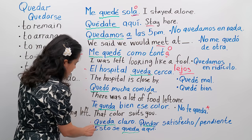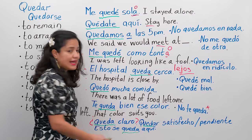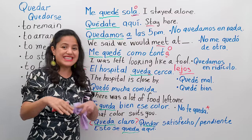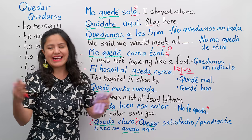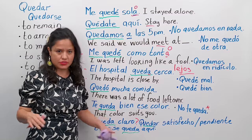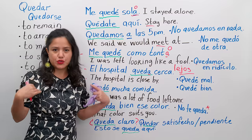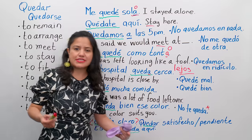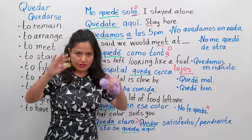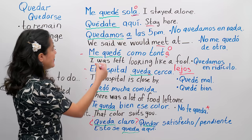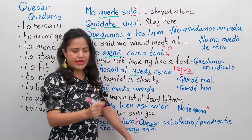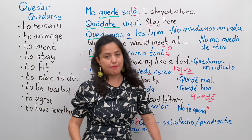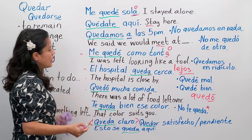¿Queda claro? I can ask you ¿queda claro? — to everybody, is it clear? Or ¿te queda claro? — is it clear to you? You could say sí, queda claro or sí, me queda claro — it's clear to me. In the past: ese tema quedó claro — that topic was left clear, quedó claro.